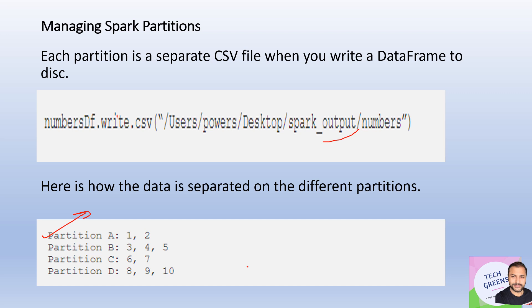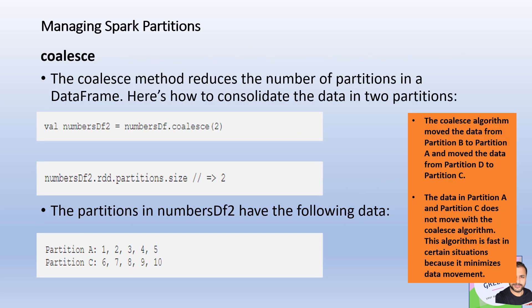Now if we try to do a coalesce — one of the mechanisms to reduce the number of partitions in a DataFrame — we coalesce this DataFrame, which currently has four or five partitions, down to two partitions. After firing coalesce(2), the number of partitions becomes two. We now have partitions A and C, meaning data from B and D has been moved into partitions A and C. When written back as CSV, we get two parts: data from partition B has moved into partition A, and data from partition D has moved into partition C.